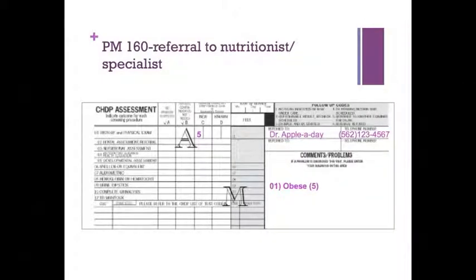If you determine a patient needs to see a specialist such as a nutritionist for overweight or obesity, your PM160 should look something like this. Follow-up code number five is written in column C of screening procedure one. In the comments or problems section, indicate the screening procedure number — in this case 01 — write the diagnosis, such as obese, and then write the follow-up code in parentheses right after the diagnosis. It's also important to write the name of the doctor or program you are referring the patient to and their phone number.